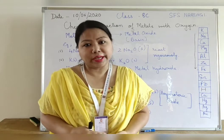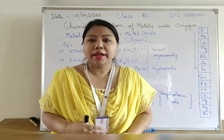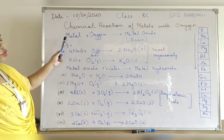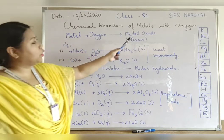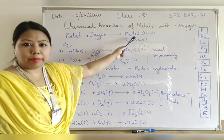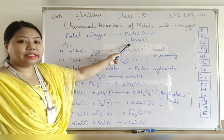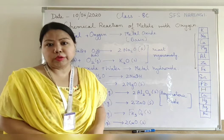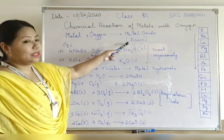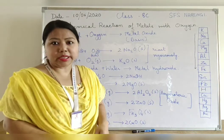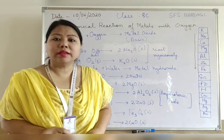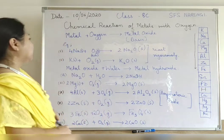Since you have understood the reactivity of metals, let us understand how metals react with oxygen. Metals usually react with oxygen to produce metal oxide. Metal reacts with oxygen to produce metal oxide and the metal oxide is basic in nature. That means the metal oxide which is produced will turn red litmus paper blue.